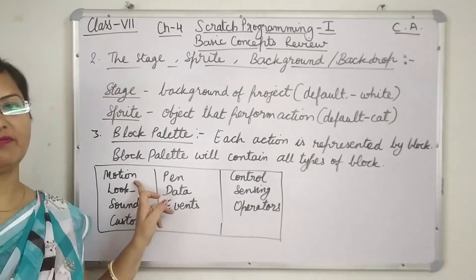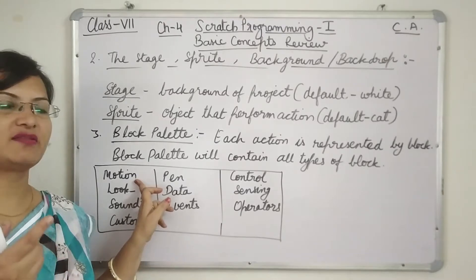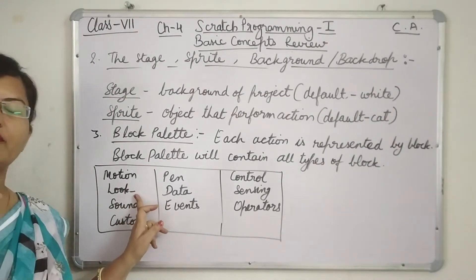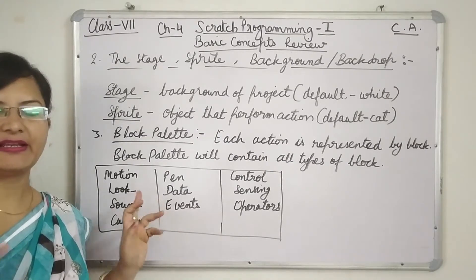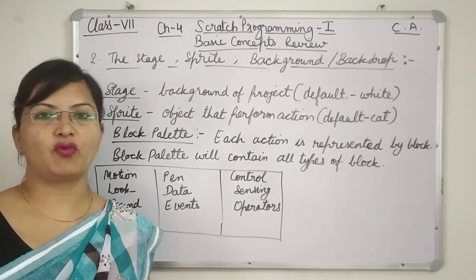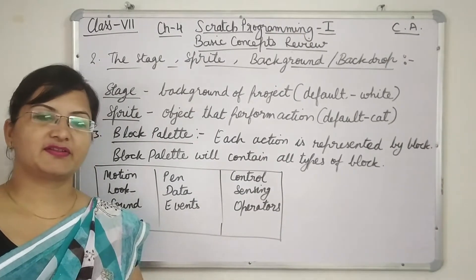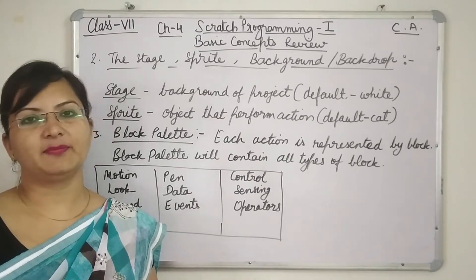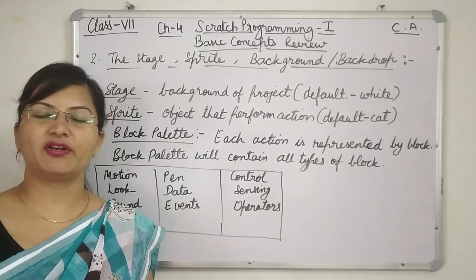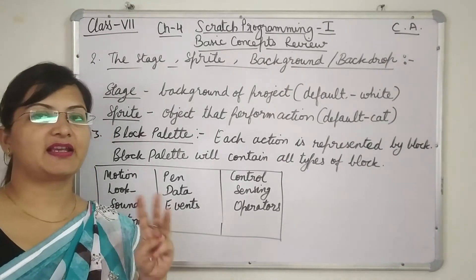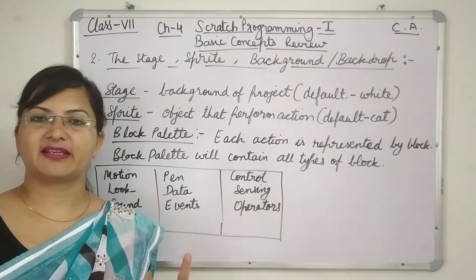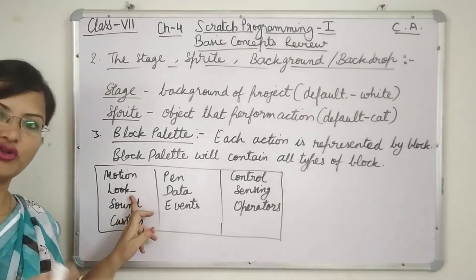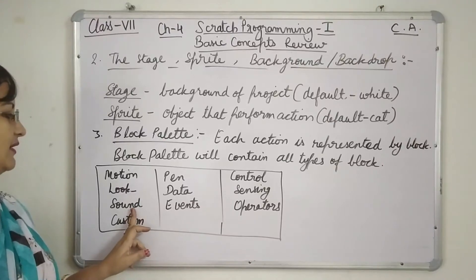With motion blocks, we can move the object, turn it, set its position, and point it somewhere. There are look blocks to change the costume of the Sprite — for example, a walking cat can have poses: left leg ahead, right leg ahead, or standing. To show movement, we change the costume after a specific time.